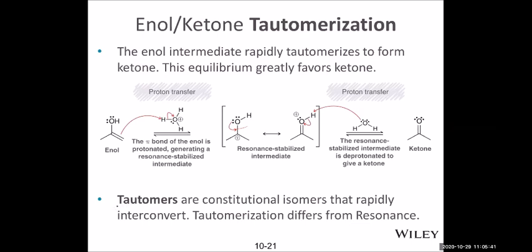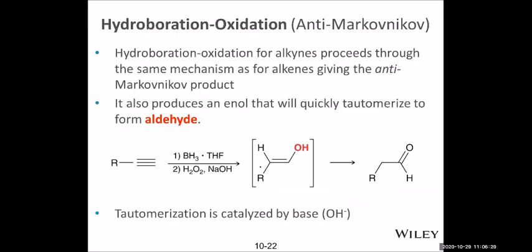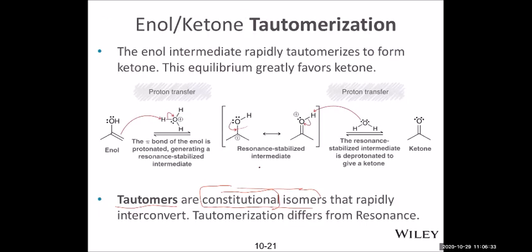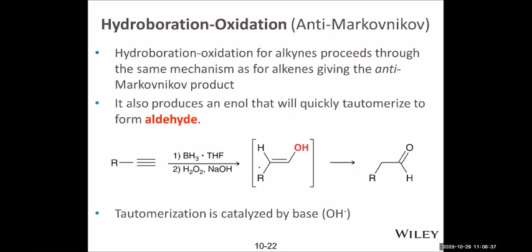Tautomers are basically constitutional isomers where the bonding is different, but for whatever reason they can easily change back and forth into the other structure. We call them tautomers. Constitutional isomers are often distinctly different compounds because the bonding is completely different, but tautomers are a very special type of constitutional isomer. For many reasons, such as the acidic proton, it makes it easy to transform back and forth. This reaction is Markovnikov and not selective.